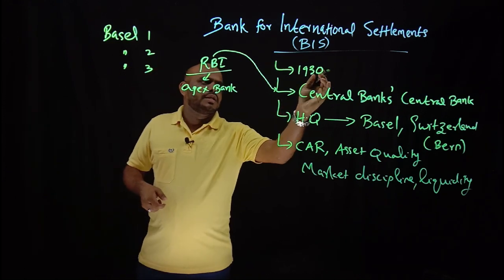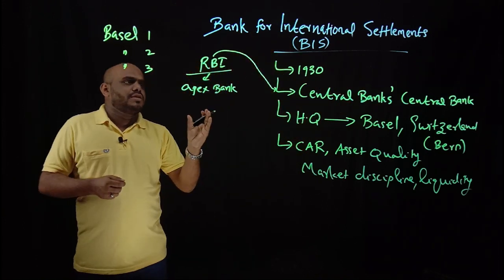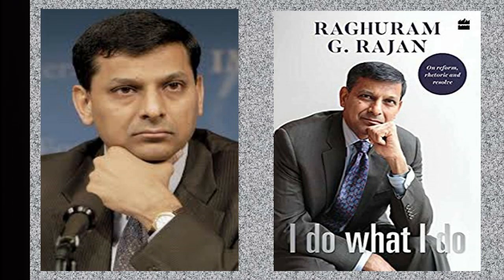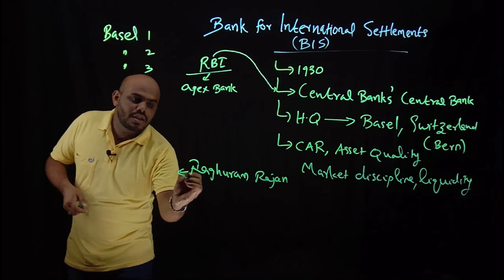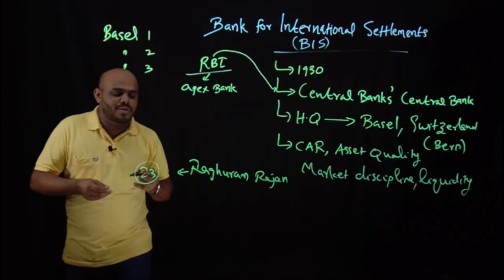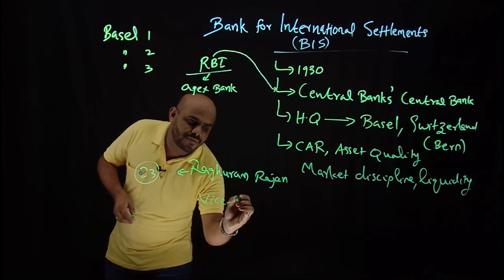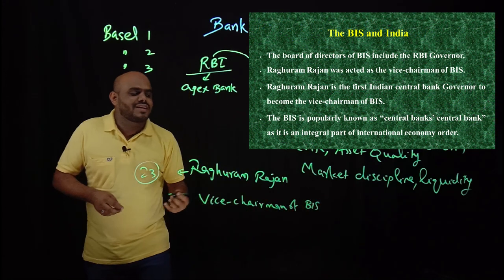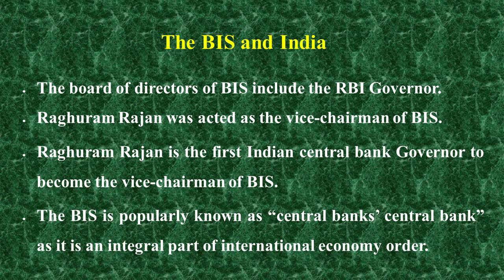India is one of the founding members of BIS. Regarding India and BIS: RBI Governor Raghuram Rajan — Raghuram Govindarajan — was the 23rd governor of RBI, and he was appointed as Vice Chairman of BIS. He was elected during the year 2015 for three years, and Raghuram Rajan was the first Indian governor to get this prestigious position.